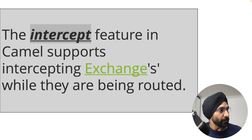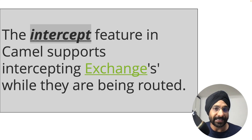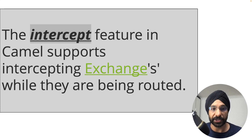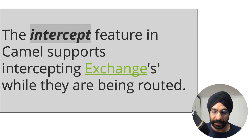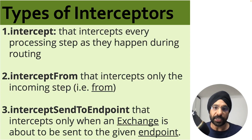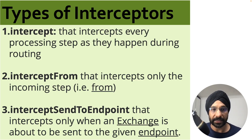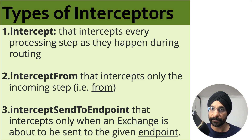In Apache Camel the intercept feature basically supports intercepting exchanges while they are being routed. There are three types of interceptors. The first is called intercept — it intercepts every processing step as it happens during routing.